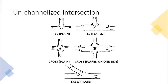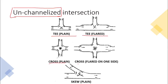In the next category, you have unchannelized intersections. A channelizing island is a piece of land with some elevation that channels traffic in a proper way. If you have channelizing islands, it is called a channelized intersection; if not, it is unchannelized. In the channelized category you again have the same sub-types: T intersection, cross intersection, skew intersection. But there is one more term here — a flared intersection.